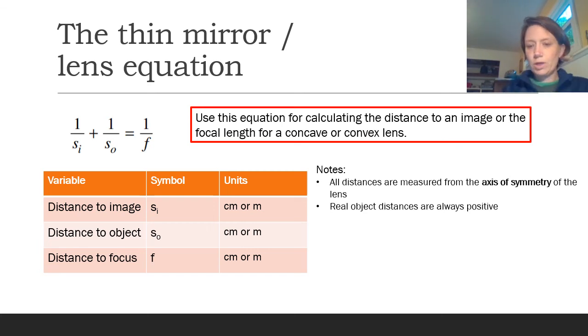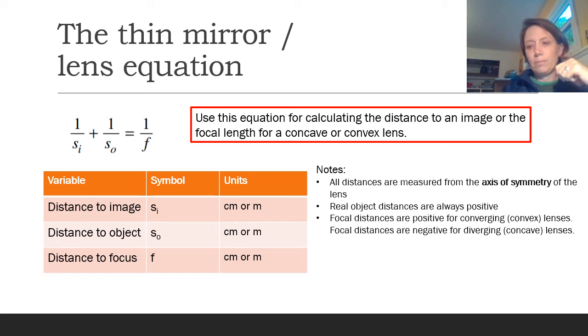Remember that object distances are always positive. As far as the F distance, we want positive for all converging devices. So for lenses, that's a convex lens. When we're talking about diverging devices or concave lenses, we're going to use a negative value for the F.